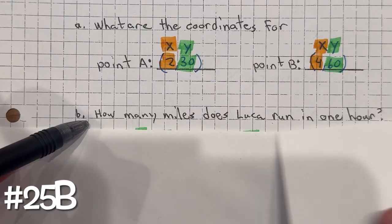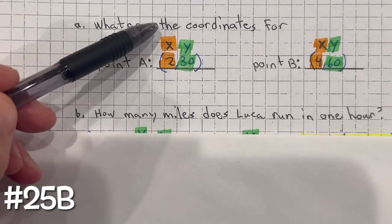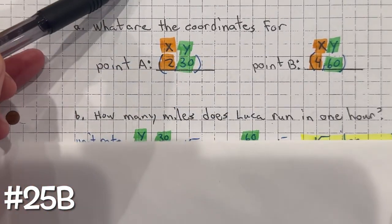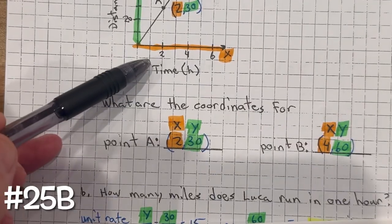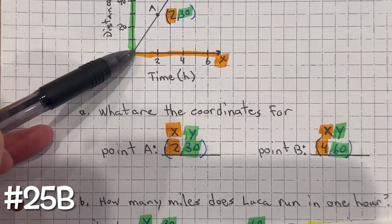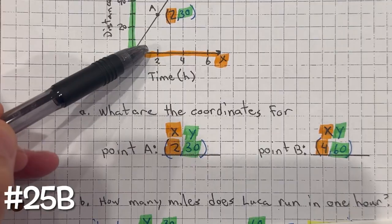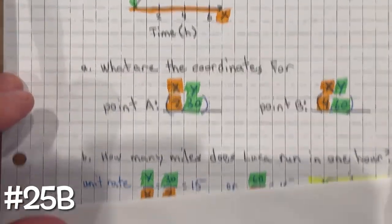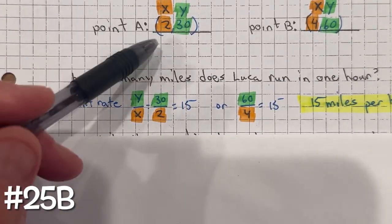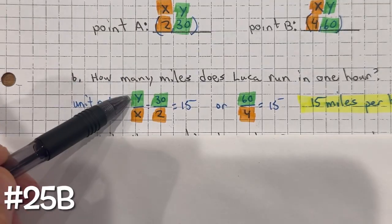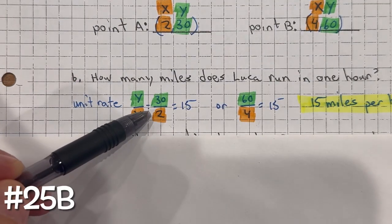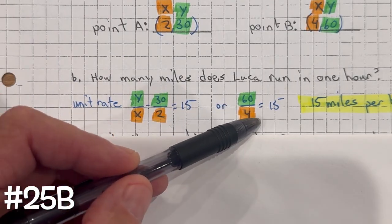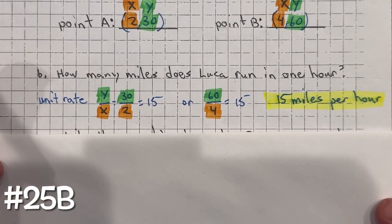Part B: how many miles does Luca run in one hour? We need to find the unit rate. We can take either of the two points, but we can't use the graph directly because it doesn't fall on a lattice point for one hour — it looks like 15 or 16, we can't tell. So we use the known points and divide y by x: 30 divided by 2 is 15, or 60 divided by 4 is 15. So Luca runs 15 miles per hour.